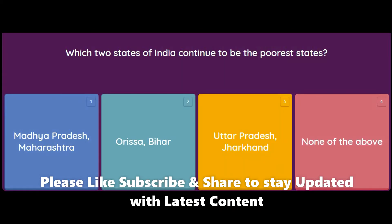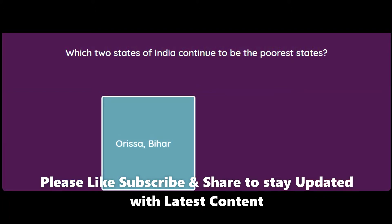Which two states of India continue to be the poorest states? Madhya Pradesh and Maharashtra, Odisha and Bihar, Uttar Pradesh and Jharkhand, or none of the above? If you have read the textbook, the answer is Odisha and Bihar.